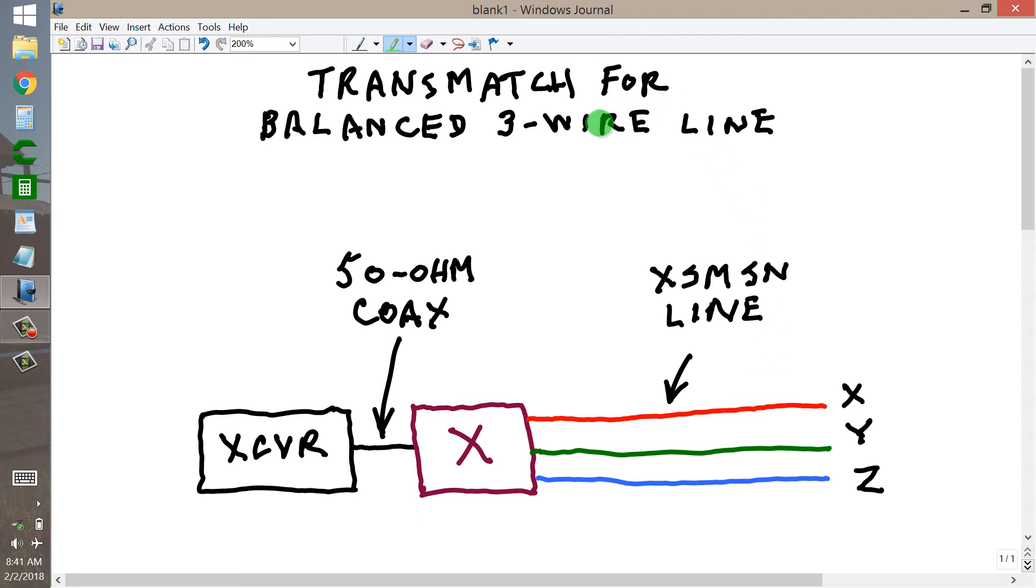Now, the key to getting this thing to work is building a transmatch, or an antenna tuner, that has a balanced 3-wire output. And by balanced, I mean the currents in each of the 3 wires must have the same intensity, it's just that they differ by 120 degrees of phase, or one-third of a cycle each.